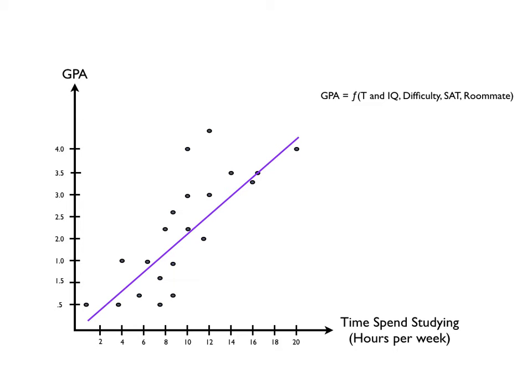We hold the IQ at, say, 100, the difficulty at a level of 5, the SAT at, say, 1200 for math and verbal, and some dummy variable of 1 or 0 for a roommate who is a partier. And we get some ideas when we control for these other factors. Now we can get a better idea of the effect time spent studying has on your GPA.